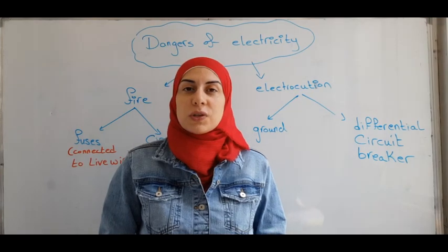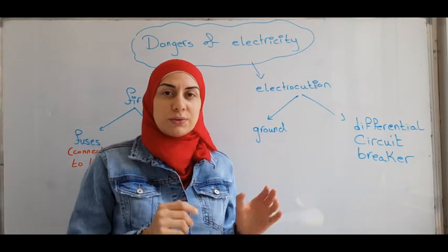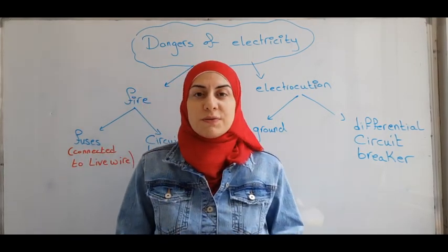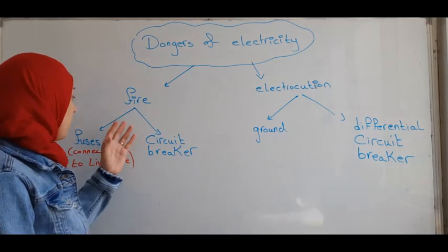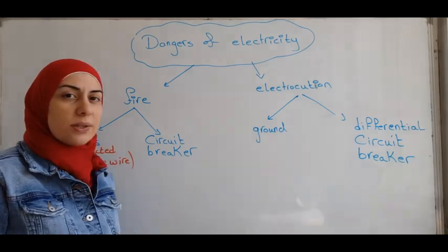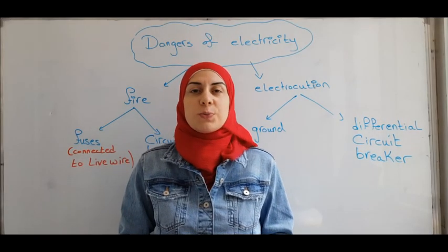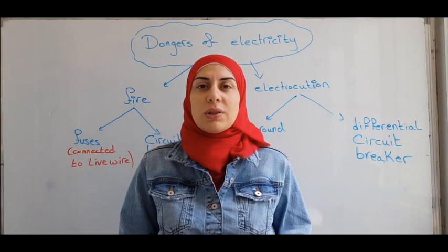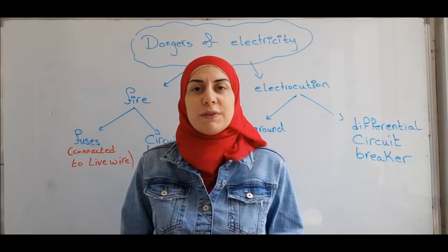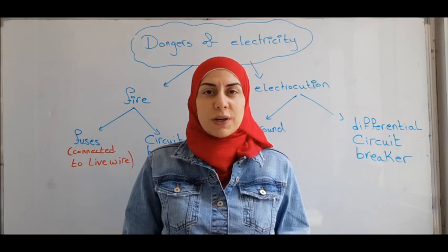We have two dangers of electricity: fire and electrocution. To prevent ourselves from the dangers of electricity, we use protection methods. For the fire, we use fuses and circuit breaker. The fuse is used to protect an electric appliance. It melts when the current entering the electric appliance exceeds a given value that is suitable for this device.